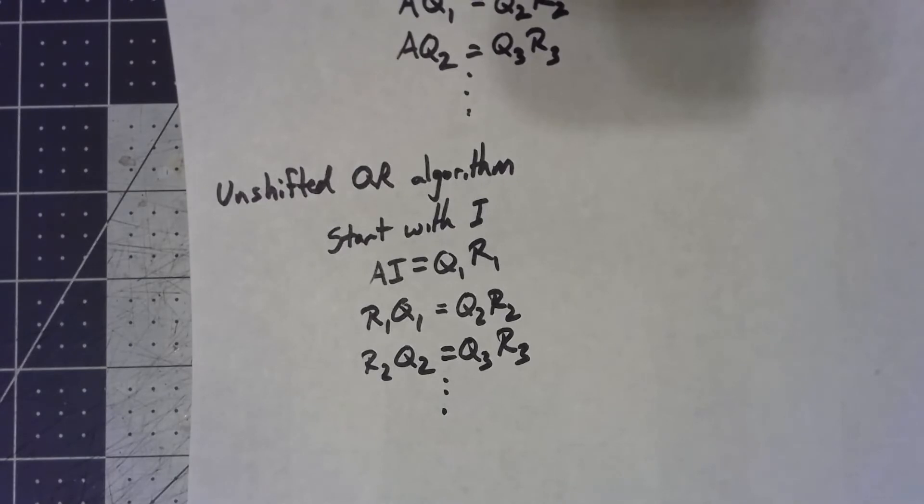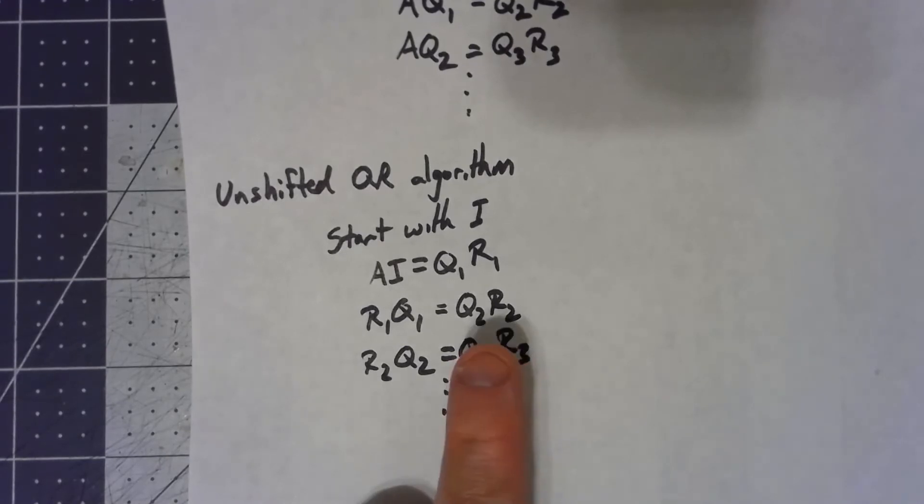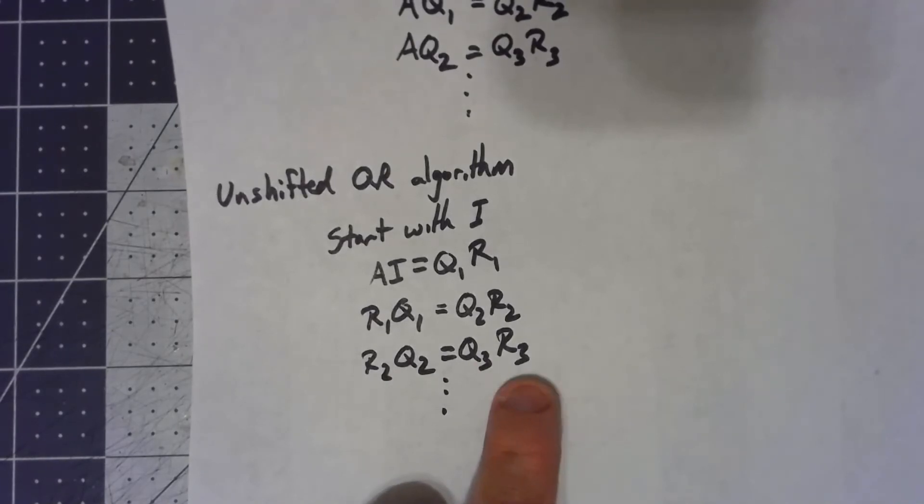Again, under the right conditions, the Qs will be converging to the eigenvectors, and the Rs are all going to be upper triangular matrices, and the diagonal entries there should be converging toward the eigenvalues.